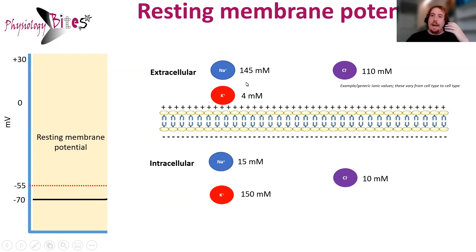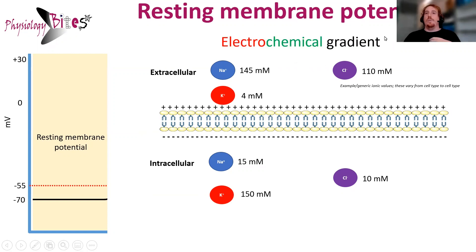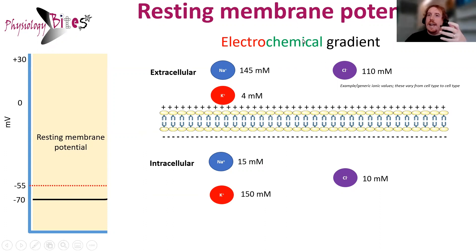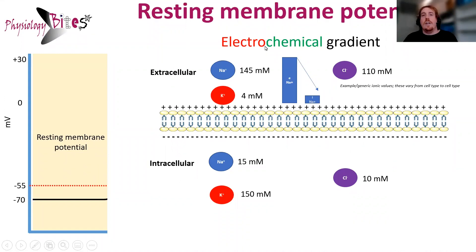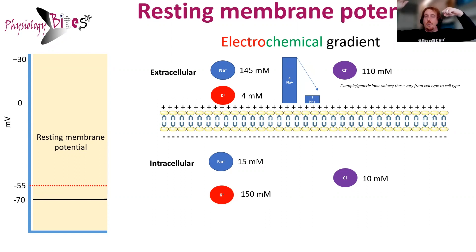Throughout this presentation, I'm going to be talking about the phases of action potential, and the ions will move according to what we call the electrochemical gradient. The electrochemical gradient is a combination of two separate driving forces. The first being a chemical gradient — a chemical gradient is when a substance moves from an area of high concentration to an area of low concentration. So if we're talking about sodium ions, sodium will move from an area of high concentration to low, and this is what happens during depolarization. That's one driving force: the movement of ions from high to low concentration.